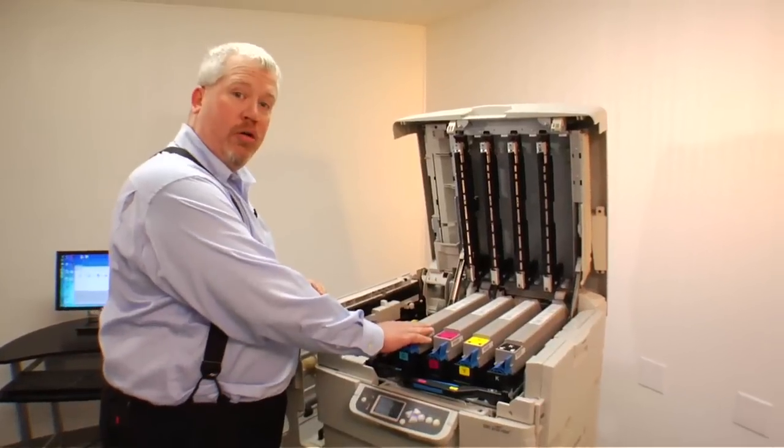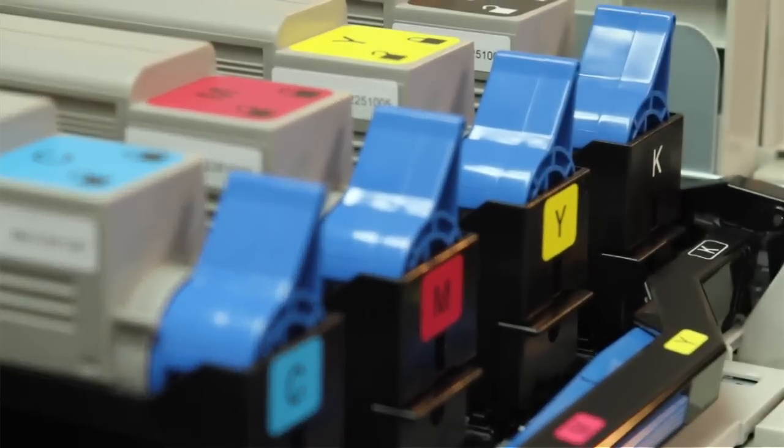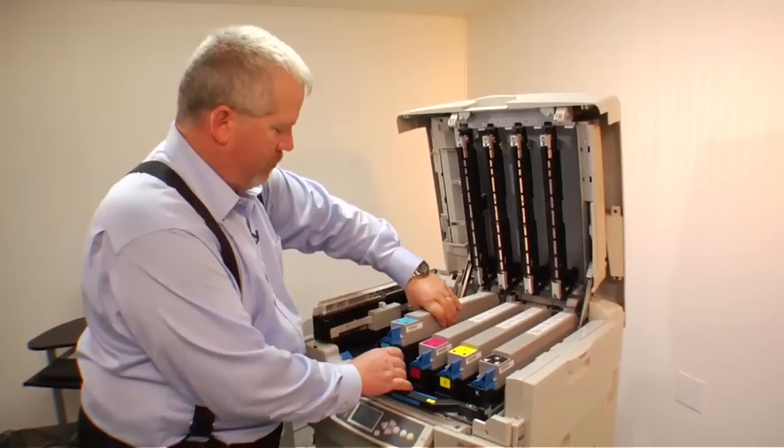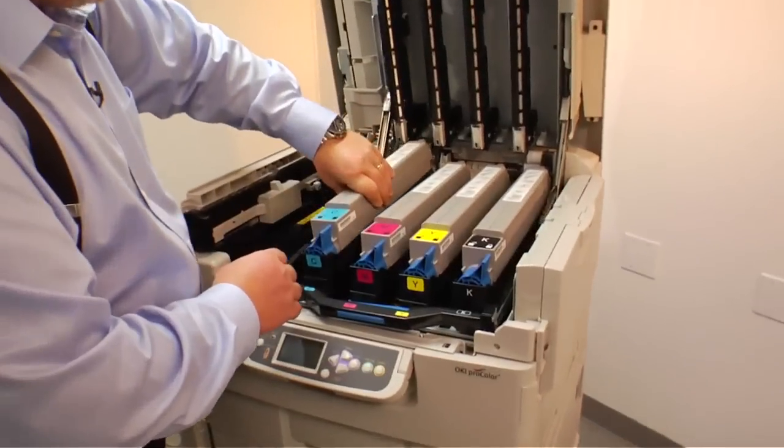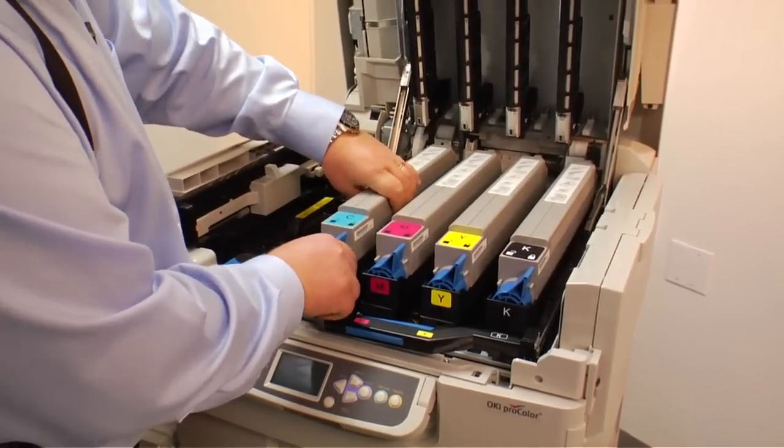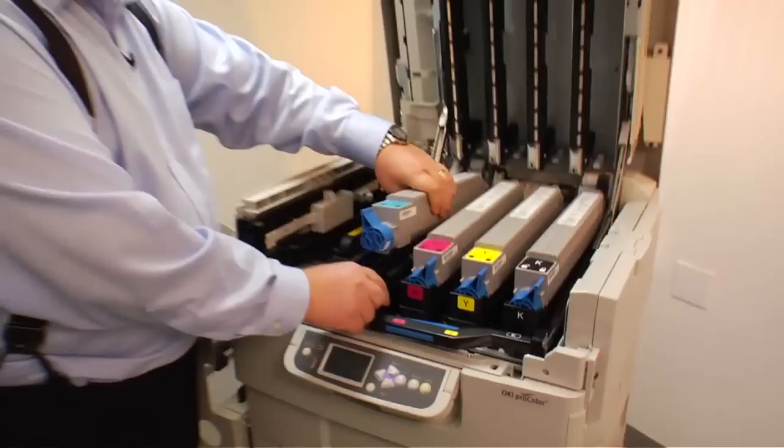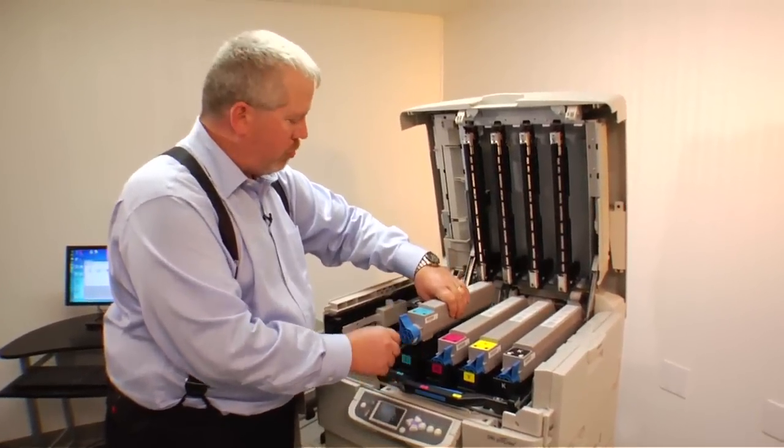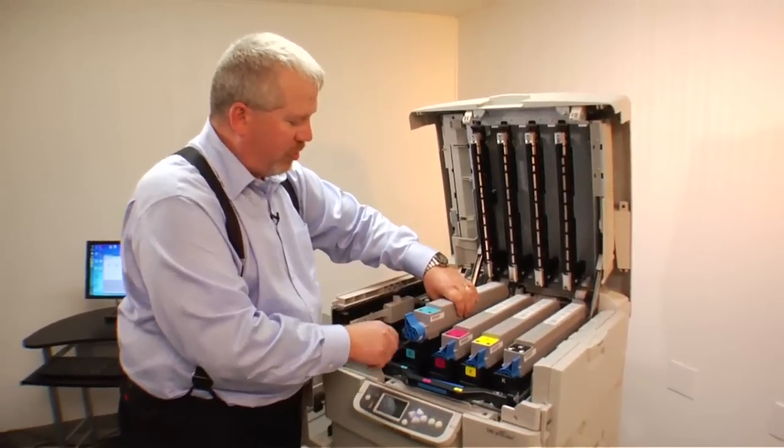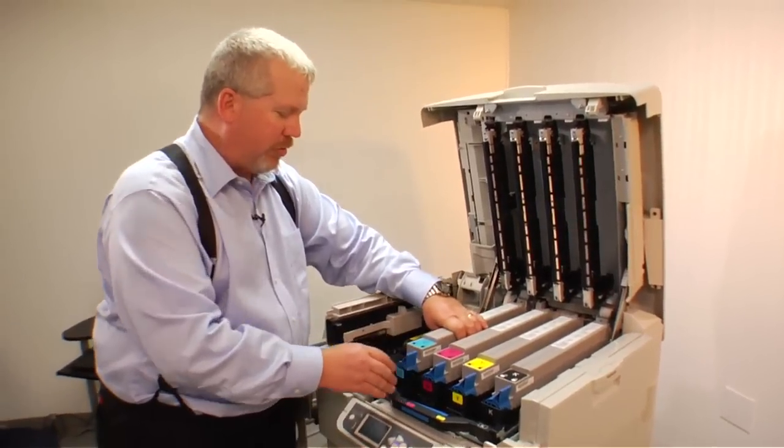We've got four toner cartridges: cyan, magenta, yellow, black, and they are part of the imaging drum itself. But what's unique about this printer is that each one of these pieces is unlockable to where we can just replace the toner or the drum, the fuser itself or the transfer belt, at recommended duty cycles.